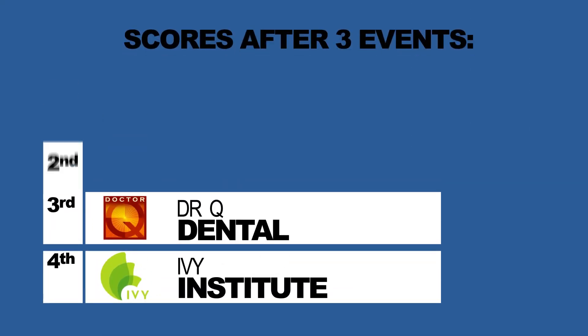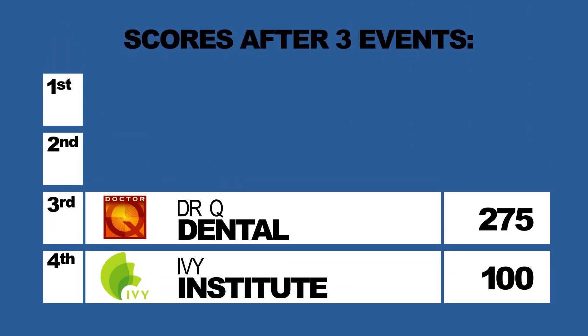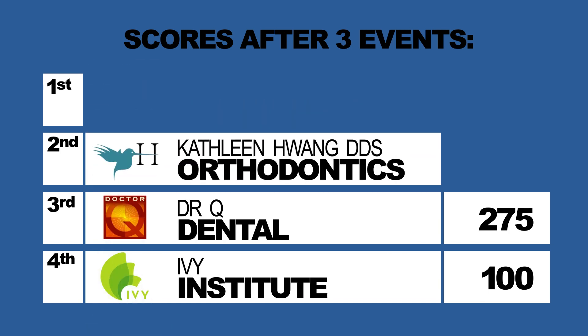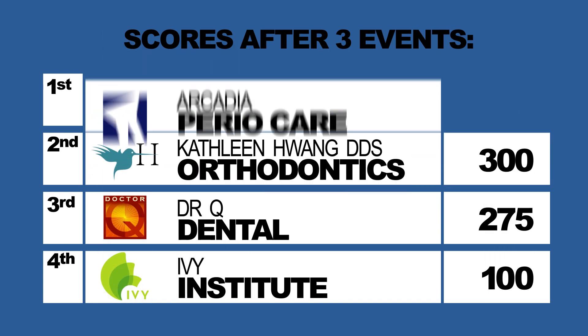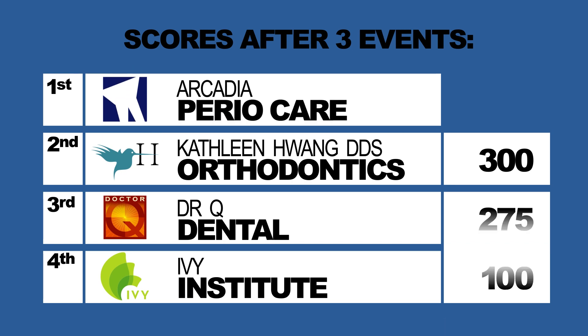So after three events, our scoreboard looks like this. With the top two teams being Team Dr. Huang Orthodontics in second place with 300 points. And Team Periocare is in first place with 375 points. Come on, people. We need more points.